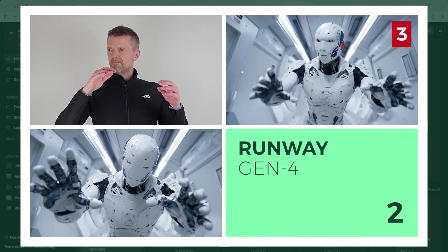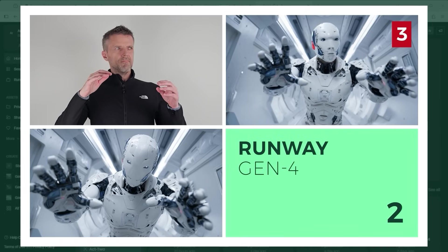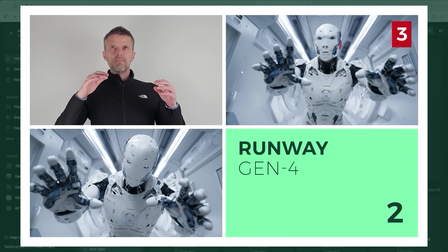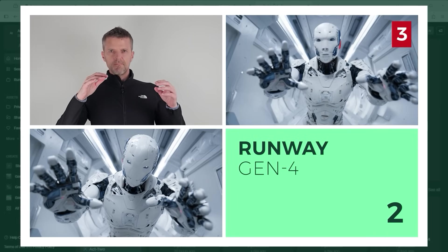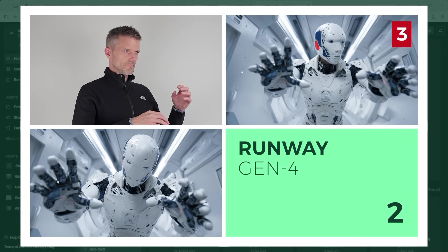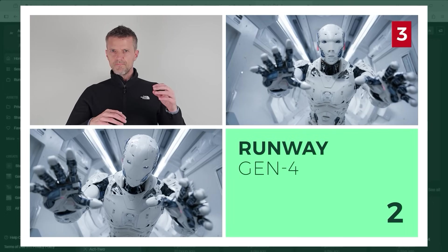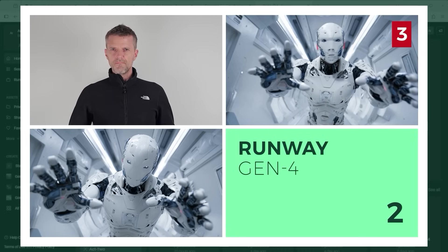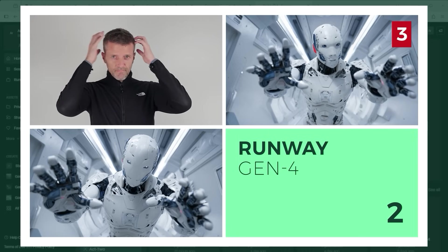In the next clip we switch to a robot on board an interplanetary spacecraft. I gave it my best shot, trying to move like a machine — stiff, mechanical, no human flow. But for whatever reason the AI just didn't buy it. Interestingly, even though I used a character input that clearly had no face, Runway decided to give the robot a full set of facial features anyway. That wasn't part of the plan.